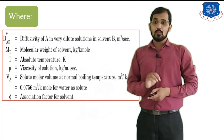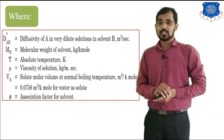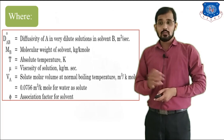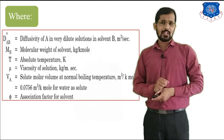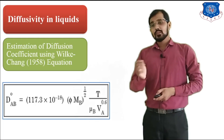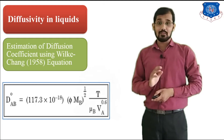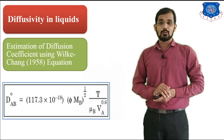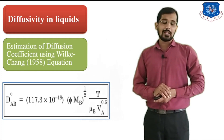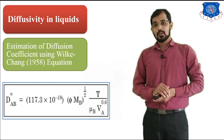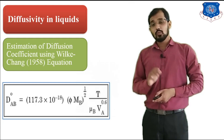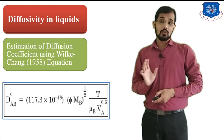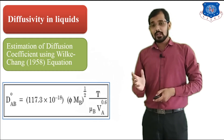VA is the solute molar volume at normal boiling temperature in m³/kmol. For water as a solute, this value is 0.0756 m³/kmol. φ is the association factor for the solvent. Be careful with units while solving numericals, as units are very important. This equation can be asked for 3 marks and a related numerical for marks in your exam.